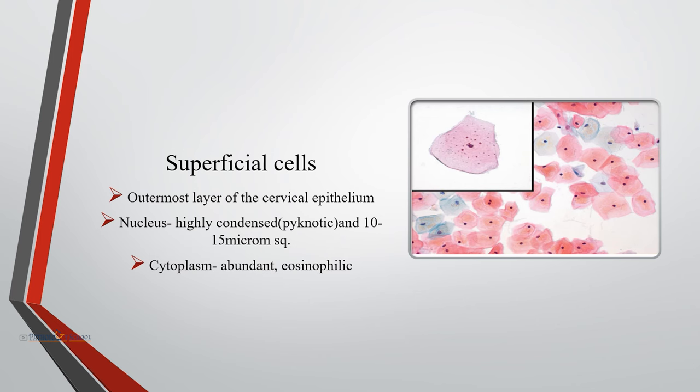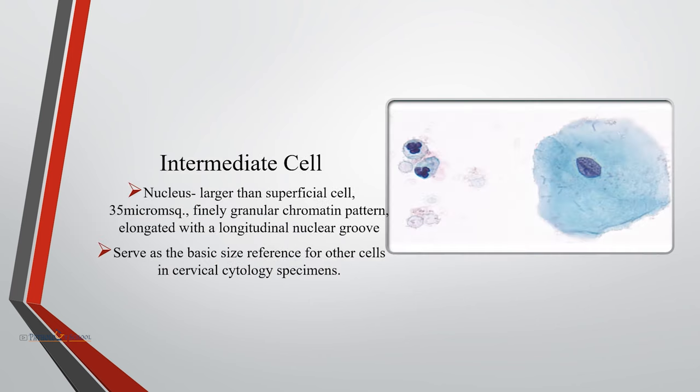Intermediate cells are usually present in the middle layer of the squamous epithelium. Their nucleus is larger than the superficial cell, with a nuclear cross-sectional area of 35 micrometers squared, and they show a finely granular chromatin pattern. The nucleus is elongated with a longitudinal nuclear groove and serves as a basic size reference for other cells in cervical cytology. Intermediate cells are usually seen during pregnancy and with the use of progesterone agents.